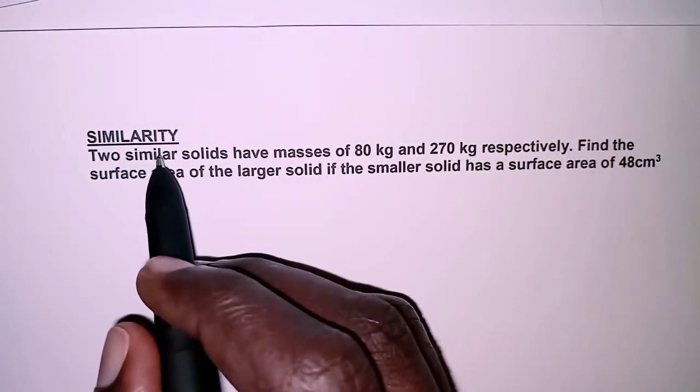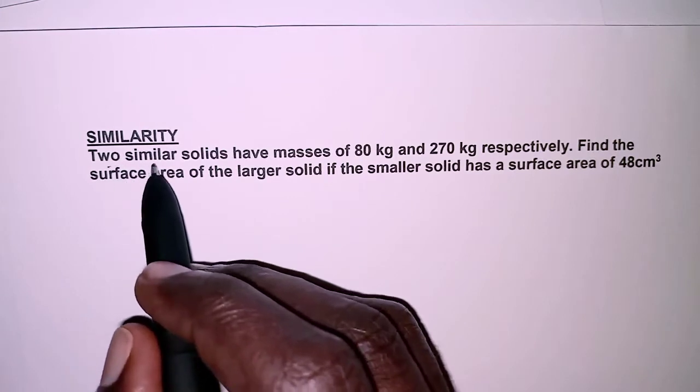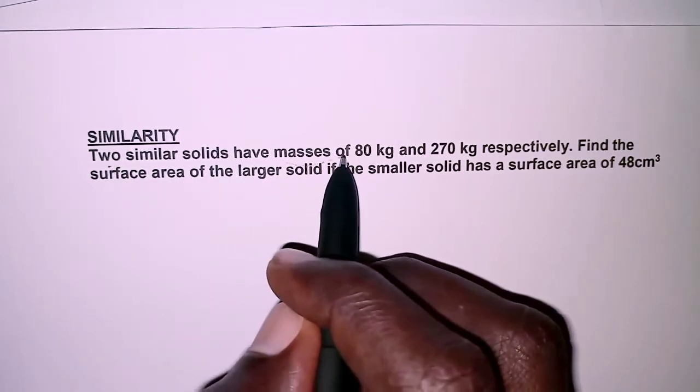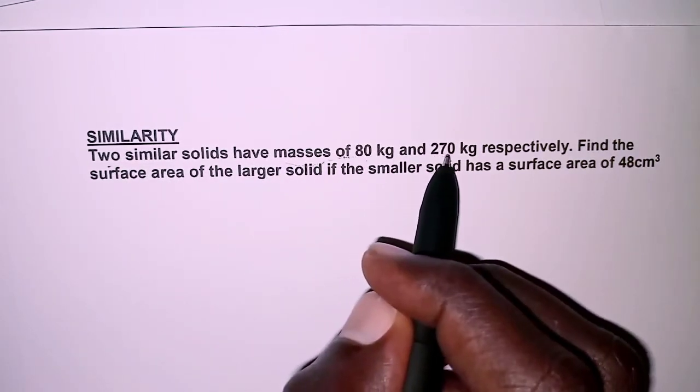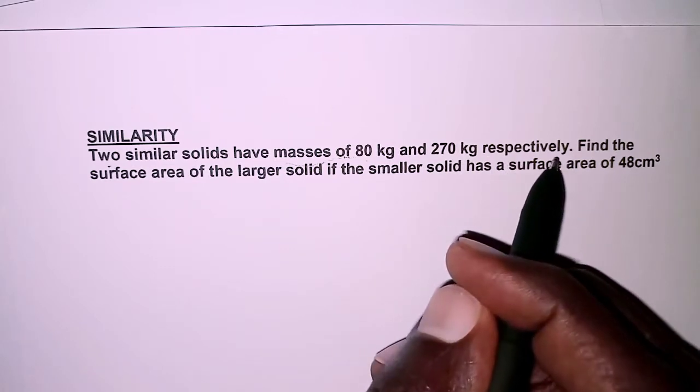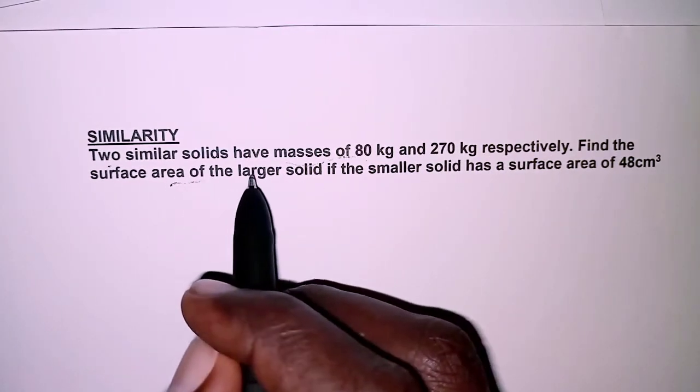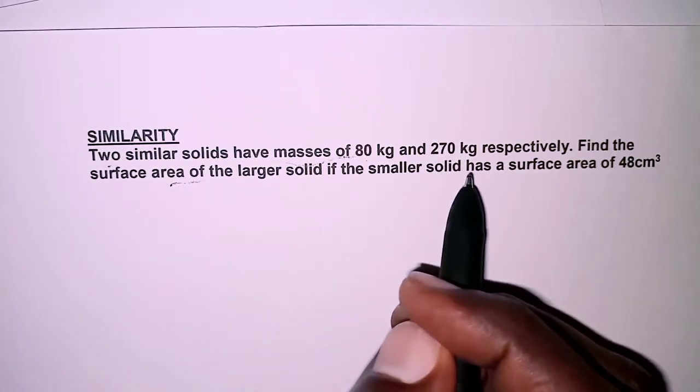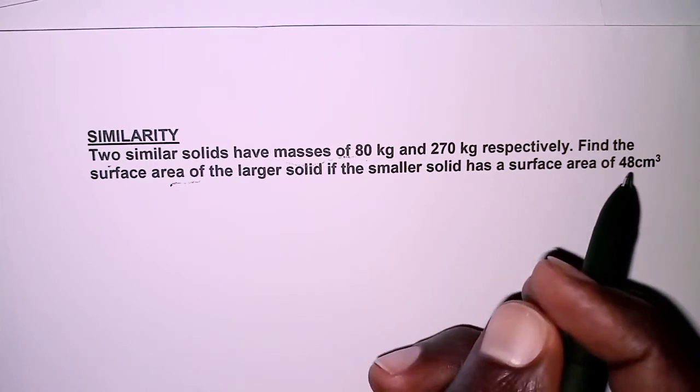The question today is on similarity. Two similar solids have masses of 80 kilograms and 270 kilograms respectively. Find the surface area of the larger solid if the smaller solid has a surface area of 48 square centimeters.